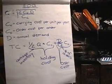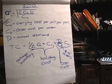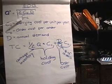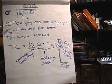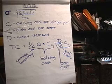The EOQ, economic order quantity. The formula is Q star equals the square root of 2 times C sub O times D divided by C sub C. Where C sub C is the carrying cost or holding cost per unit per year. C sub O is the order cost per order. D is the annual demand.